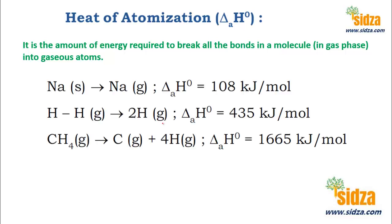Suppose we have sodium here — sodium metal in the solid state. The amount of energy that we need to convert sodium metal from the solid state to the gaseous state is the heat of atomization. So 108 kilojoules of heat is required to convert one mole of sodium from solid to the gaseous state.